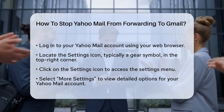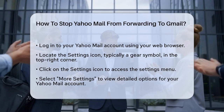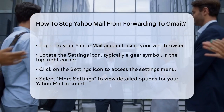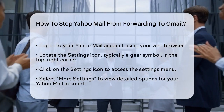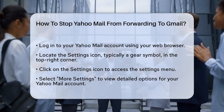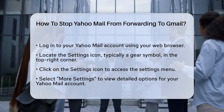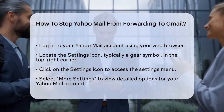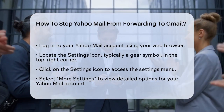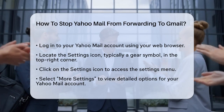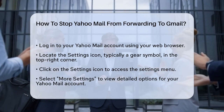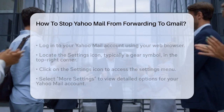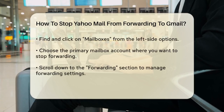First, you need to log into your Yahoo Mail account. Open your web browser, go to the Yahoo Mail website, and enter your login credentials. Once you're logged in, look for the settings icon in the top right corner of the screen. It's usually a small gear symbol. Click on this icon to open the settings menu.